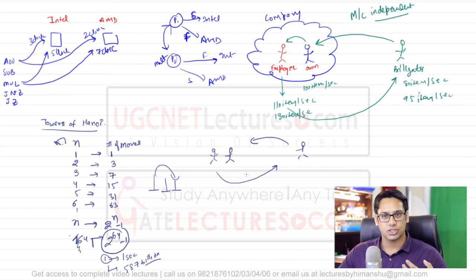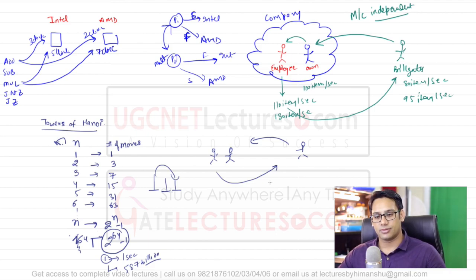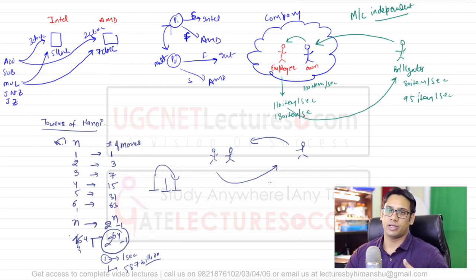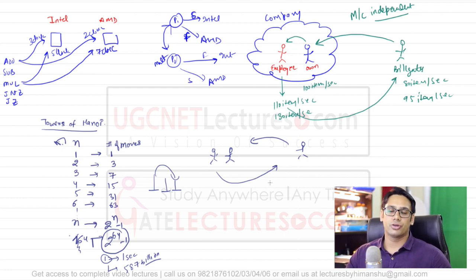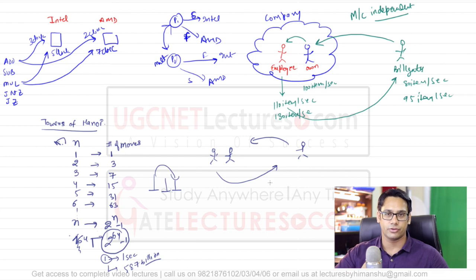That is why this topic is very important — what is the number of statements being executed? To find the time complexity and determine which program is better, the primary measurement is the number of statements executed. We will also look at space complexity later. First, let me show you examples of programs where we compare them in terms of number of statements executed, then introduce asymptotic notations — the rate of growth of a function.